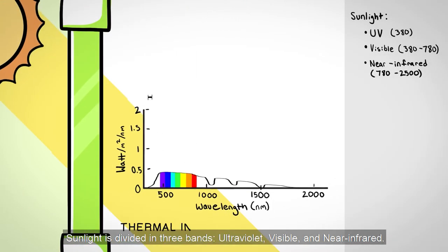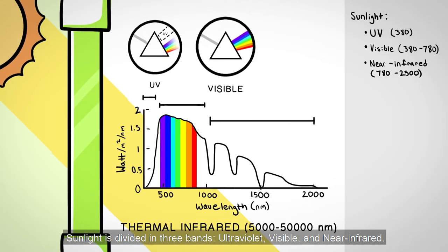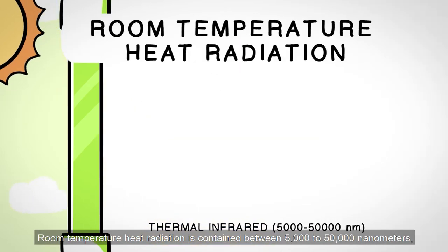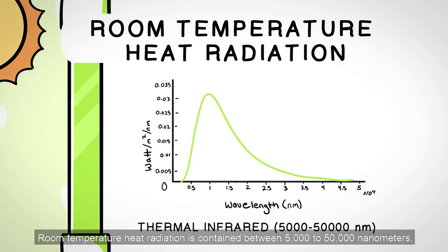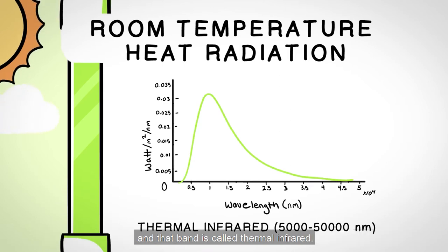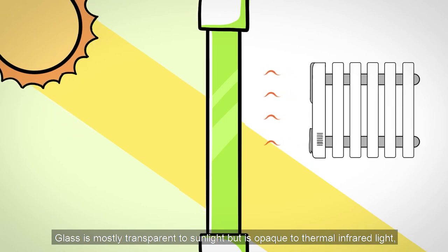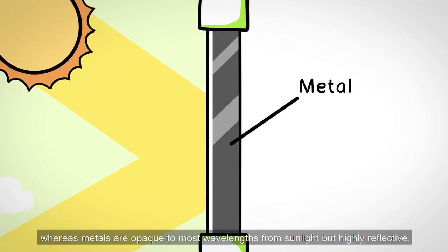Sunlight is divided in three bands: ultraviolet, visible, and near-infrared. Room temperature heat radiation is contained between 5,000 to 50,000 nanometers, and that band is called thermal infrared. Glass is mostly transparent to sunlight, but is opaque to thermal infrared light, whereas metals are opaque to most wavelengths from sunlight, but highly reflective.